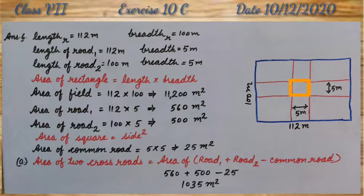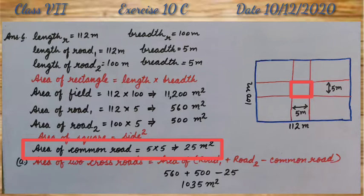We can see, at the center, two crossroads make a square. So, area of square equal to side square. Therefore, area of that common road is 25 meter square.